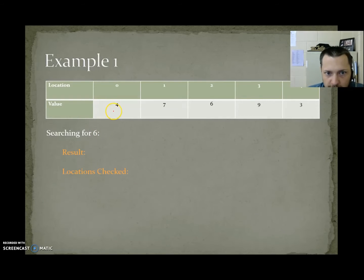Here's our first example of linear search. If we are looking for a 6, we start at the beginning of the list. Is this a 6? No. Is this a 6? No. Is this a 6? Yes. So we find our value at location 2. So our result is 2. The locations checked would be 0, 1, and 2. We had to check 3 locations to find a 6.